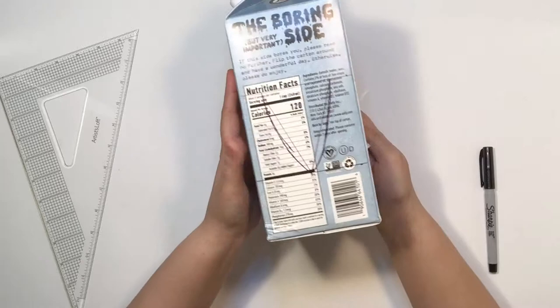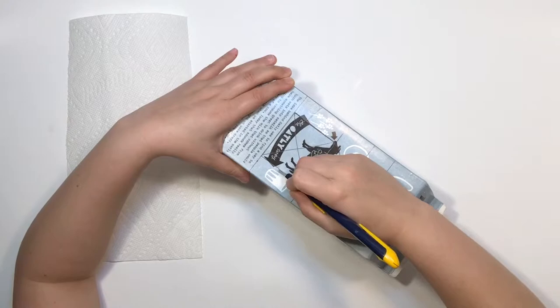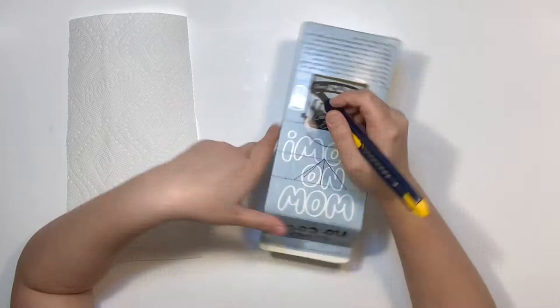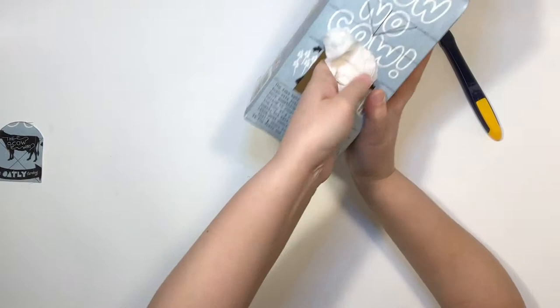Step three: cut out. Using a craft knife, cut out the main door of the feeder. If there's any residual water inside, wipe it out with a paper towel.